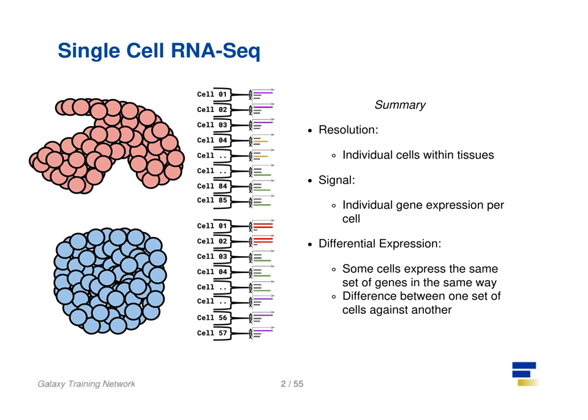With single cell RNA-Seq analysis, the focus shifts away from measuring the average expression of a tissue, and towards measuring the specific gene expression of individual cells within those tissues. Here we are no longer comparing tissue against tissue, but cell against cell. Each cell is assigned a gene profile which describes the relative abundance of genes detected within it. Many cells share the same gene profile, where a gene profile ideally describes a cell type.